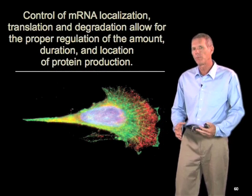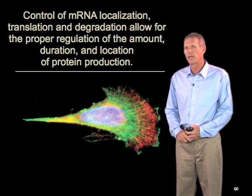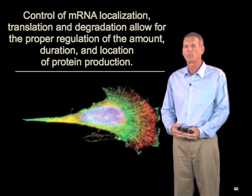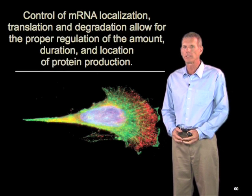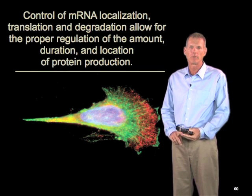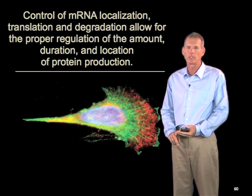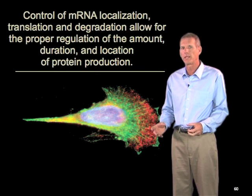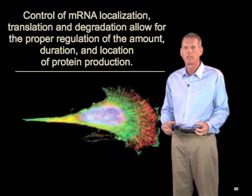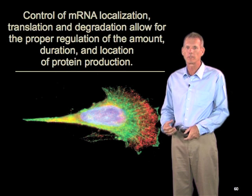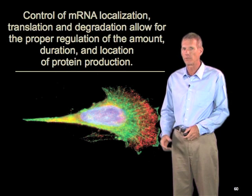I've tried to give you a big picture today of the three important processes in the cytoplasm of eukaryotic cells: mRNA localization, translation, and degradation. These are really very important for regulating the amount, the duration, and the location of protein production in complex eukaryotic cells.